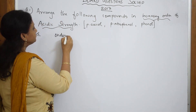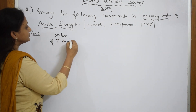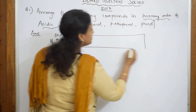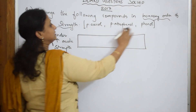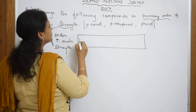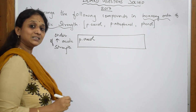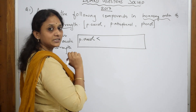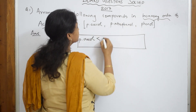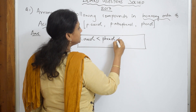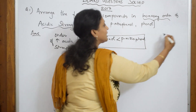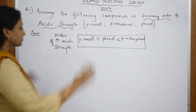Write the heading 'increasing acidic strength' and put a box around the answer in the exam so it's easy for the examiner to give you marks. Now, among all these compounds, first let me write the order and then give you the reason. Paracresol is the least acidic. Then comes phenol. Phenol is less acidic than paranitrophenol. This is the correct order — the examiner will mark this.